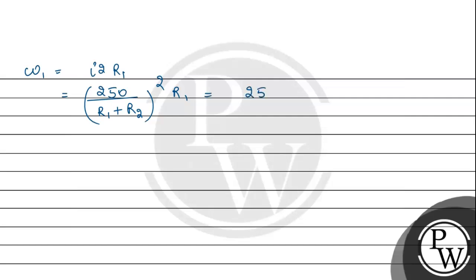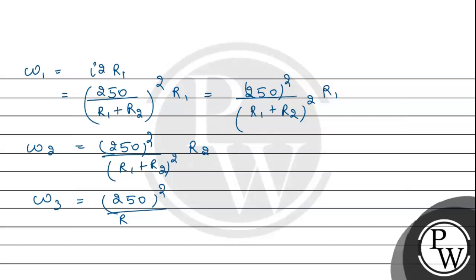This will be 250 squared divided by R1 plus R2 whole squared into R1. W2 will be 250 squared by R1 plus R2 whole squared into R2. W3 will be 250 squared by R3 squared into R3. R3 will cancel, so it will be 250 squared divided by R3.